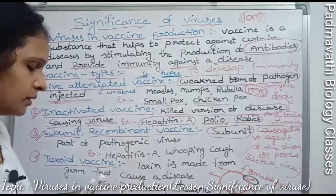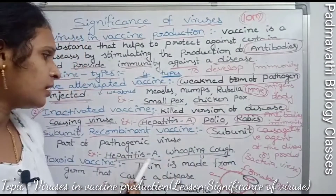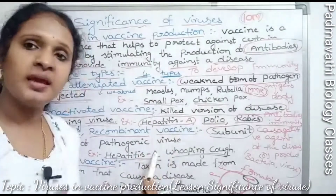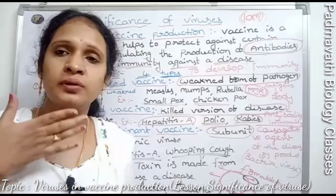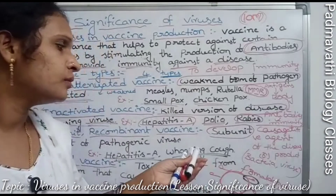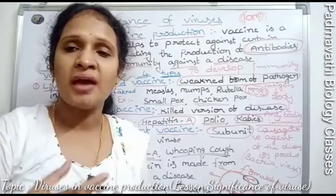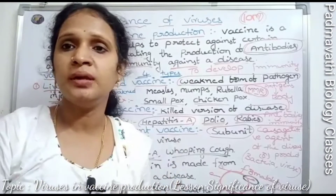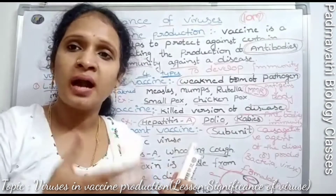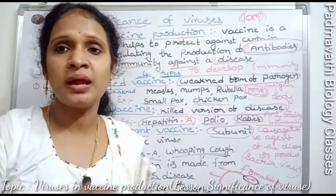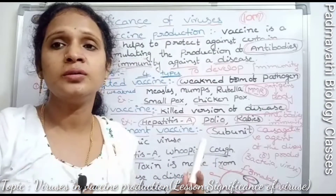This type of vaccine is used for diseases like hepatitis A and whooping cough. Whooping cough shows symptoms like cough, fever, and sneezing. The subunit recombinant vaccine is especially used for those with poor immunity systems and long-term health problems, as it provides a long-term immunity response.